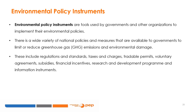Environmental policy instruments are tools used by governments and other organizations to implement their environmental policies. There is a wide variety of national policies and measures available to governments to limit or reduce GHG emissions and environmental damage. These include regulations and standards, taxes and charges, tradable permits, voluntary agreements, subsidies, financial incentives, research and development programs, and information instruments. Other policies such as those affecting trade, foreign direct investment, consumption, and social development goals can also affect GHG emissions. Climate change policies, if integrated with other government policies, can contribute to sustainable development in both developed and developing countries.